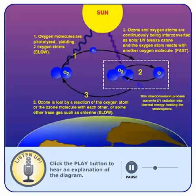Ozone and oxygen atoms are continually being interconverted as UV rays break the ozone into nascent oxygen and oxygen molecules. The oxygen atom then reacts with the oxygen molecule again, forming ozone.